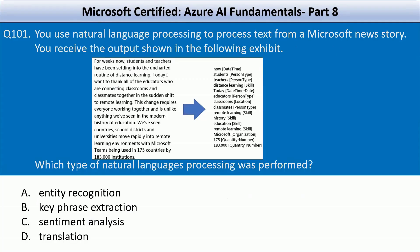Question number 101. You use natural language processing to process text from a Microsoft news story. You receive the output shown in the following exhibit — on the left-hand side you have a story and on the right-hand side you have processed text. Which type of natural language processing was performed here? Your options are entity recognition, key phrase extraction, sentiment analysis, translation. In this case, the text has been analyzed to identify and label specific entities such as dates and times, person types, organizations, skills, numbers, and location. This process of detecting and categorizing key elements from text is called entity recognition.